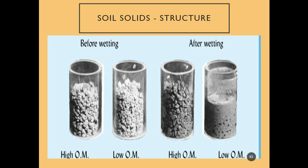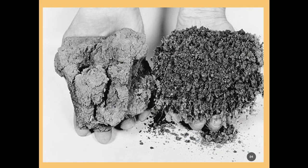Looking at two soils before and after wetting — one high in organic matter and the other low. After wetting and letting the soil sit, the high organic matter soil retains its structure while the low organic matter soil loses its structure, demonstrating the importance of organic matter. Similarly, a tilled soil that has lost organic matter compares poorly to a natural soil with granular structure, where you can see roots flowing through, maintaining porosity and growing ability.